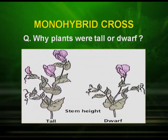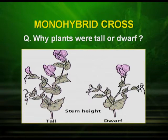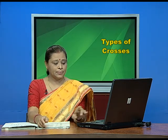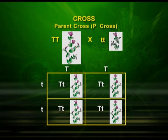Now let us look at the monohybrid cross. Mendel wondered why some plants were tall and why some were short, so he crossed a tall plant with a dwarf plant. The tall plant is denoted as TT and the short plant as tt. One allele from the tall plant (T) and one allele from the short plant (t) combine. In the first generation (F1), he obtained all tall plants with the genotype Tt, so phenotypically all plants were tall.